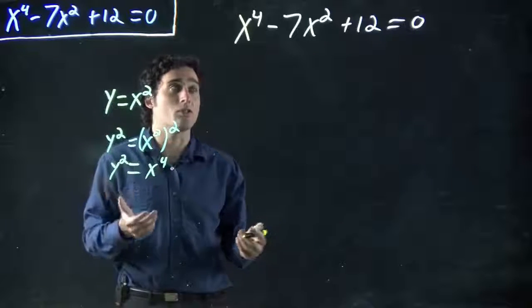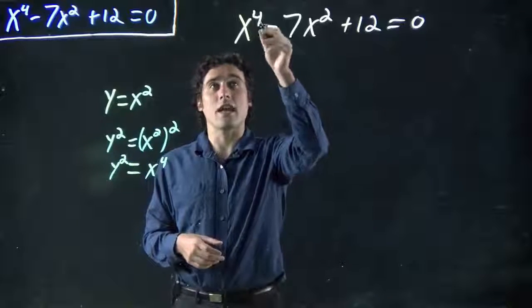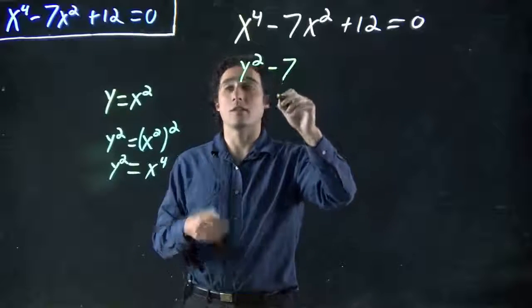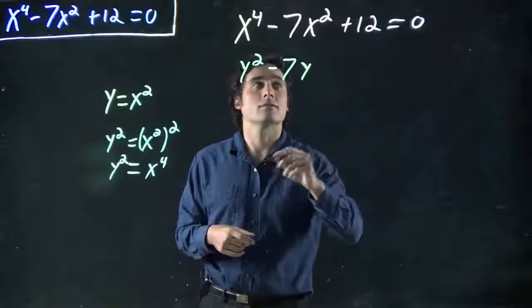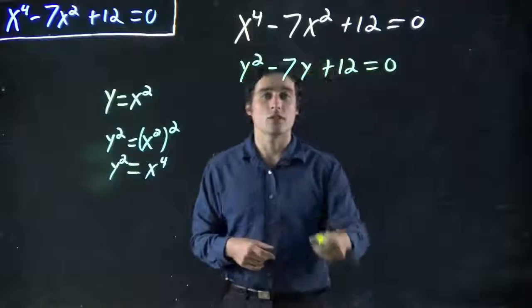And this can be that from our substitution. So instead of x to the 4, we now have y squared, minus 7y instead of x, plus 12 equals 0. And this should look familiar.